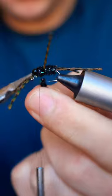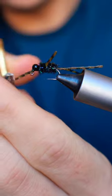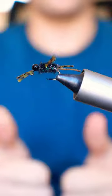Secure, snip the excess, and whip finish. Finally, trim the legs to your preferred length. What's your favorite stonefly imitation?